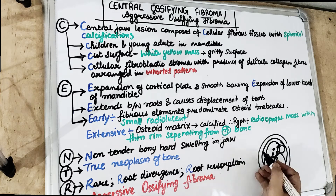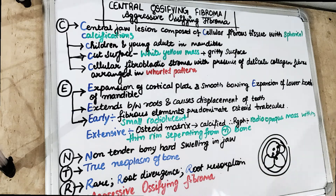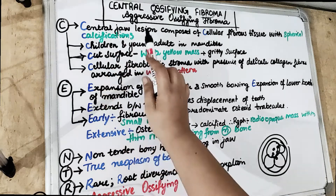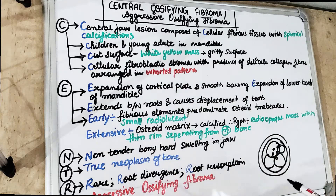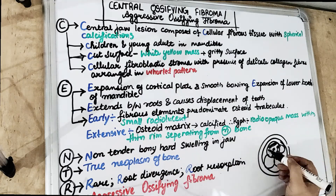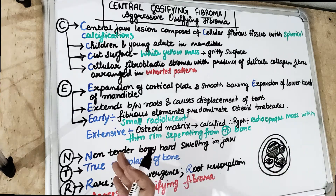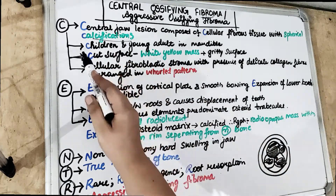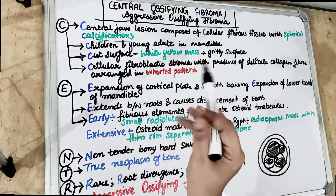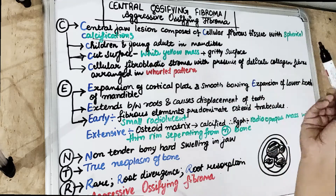In the end, there is only a thin line of radiolucency which discriminates it from the normal bone. So the central ossifying fibroma is a central jaw lesion composed of cellular fibrous tissue with spherical calcification. Initially the lesion is fibrous; later on it gets calcified and becomes hard. It is seen in children and young adults in the mandible. When we cut this fibroma, we see that it is a white yellowish mass with a gritty surface.